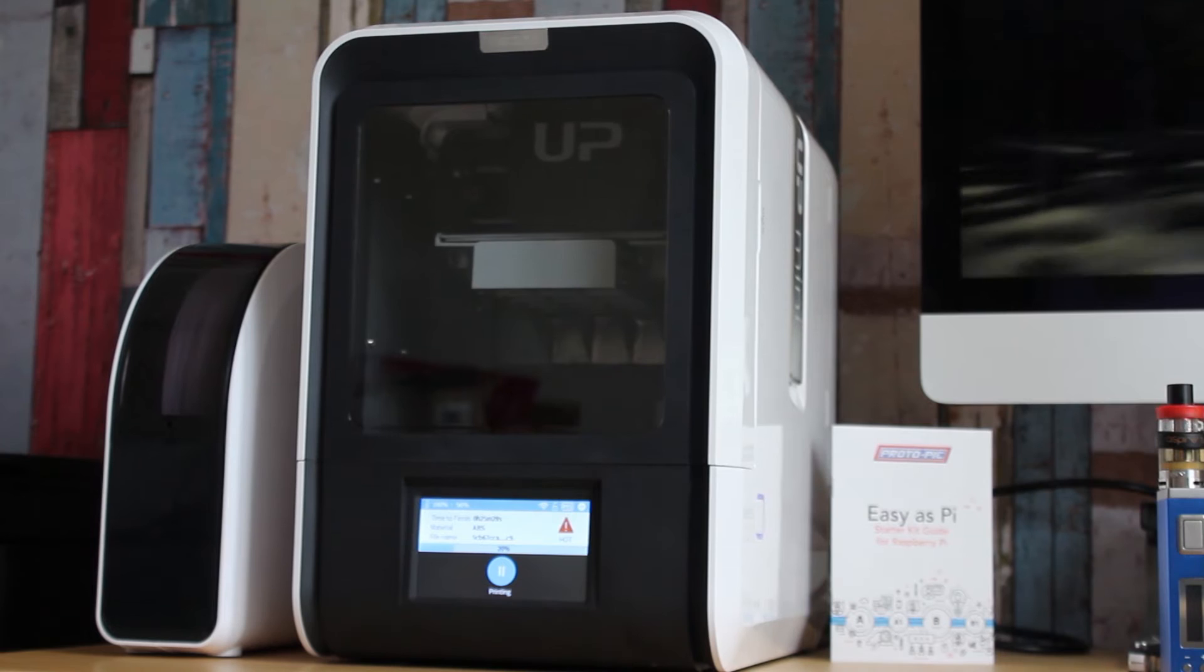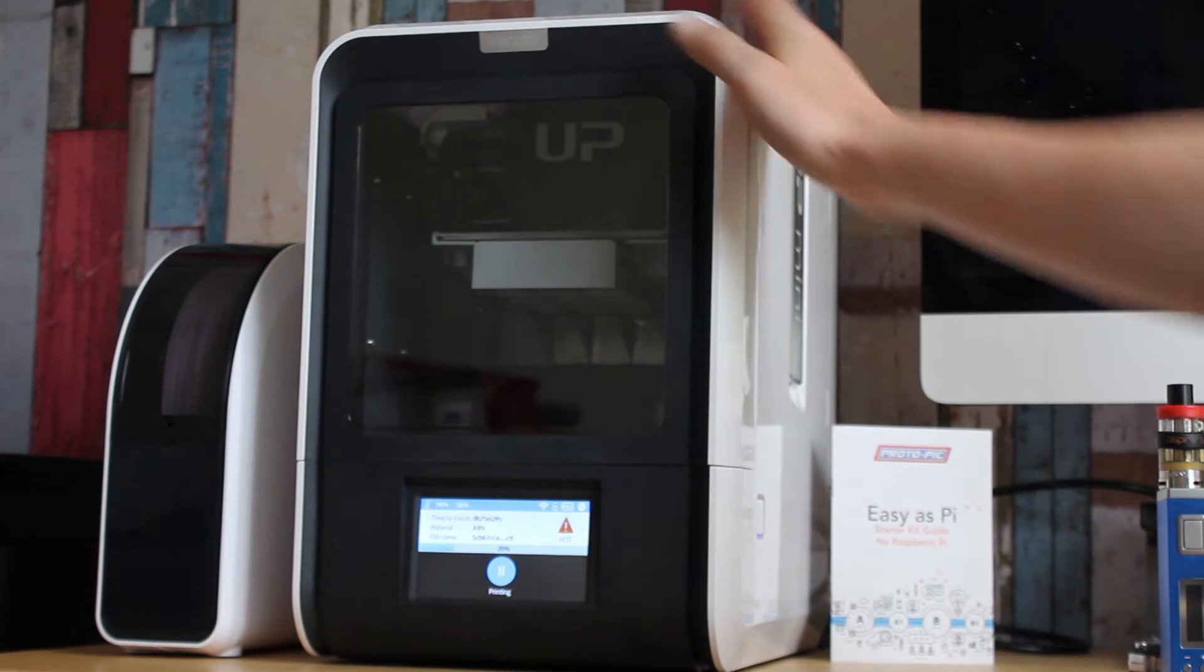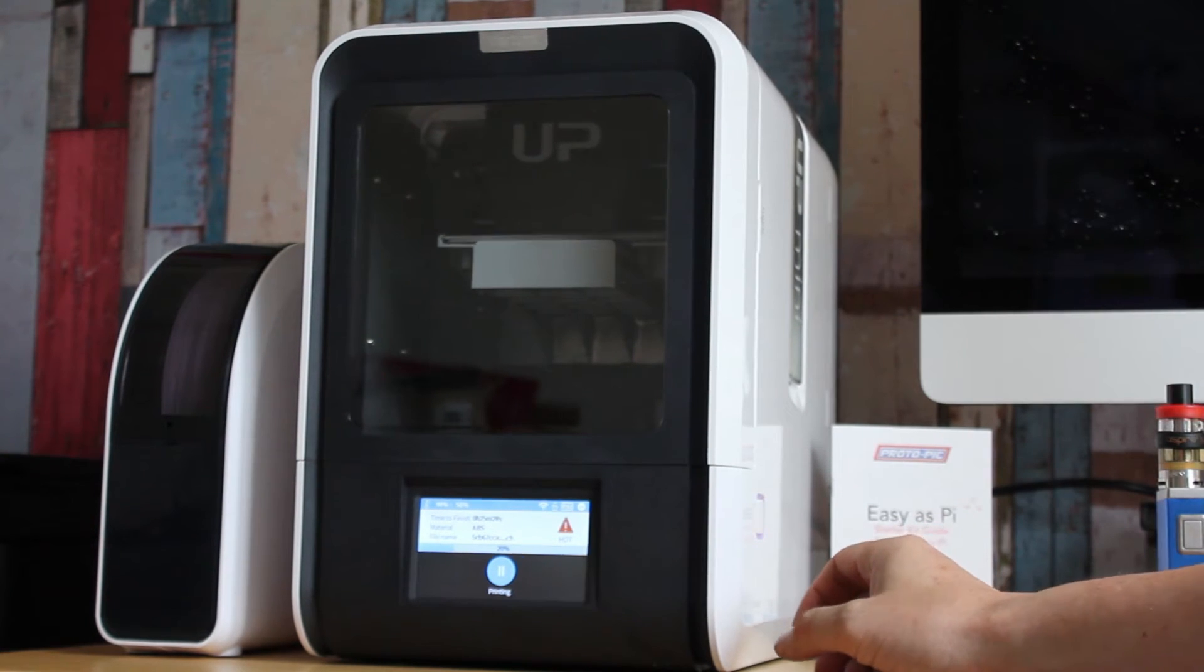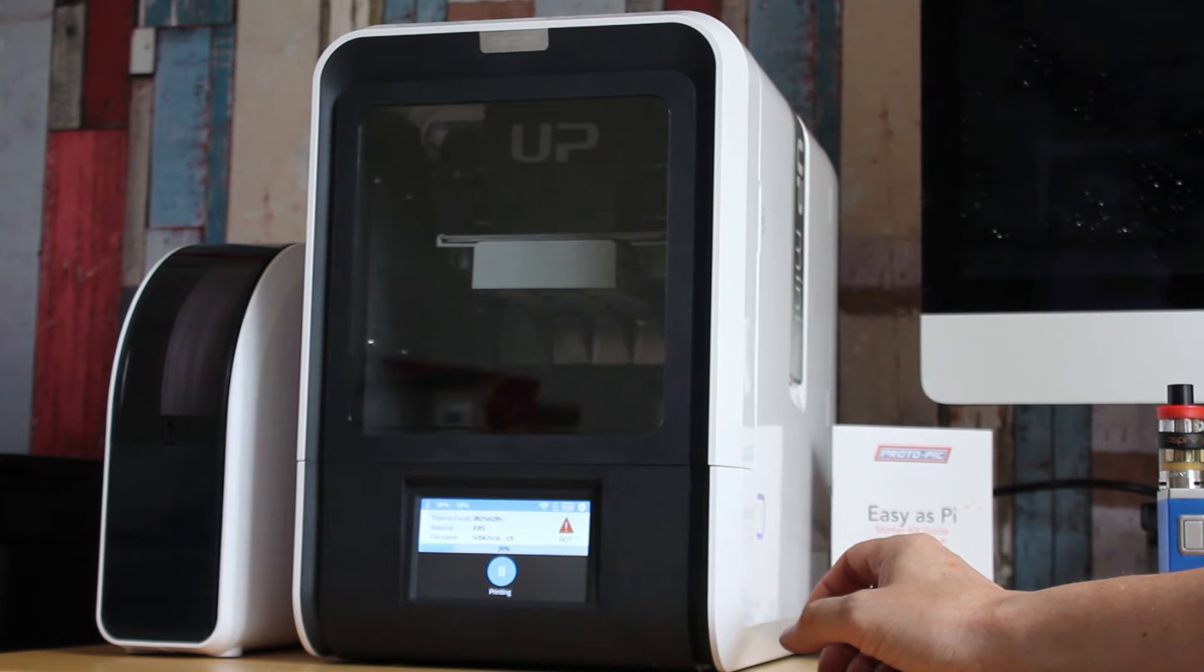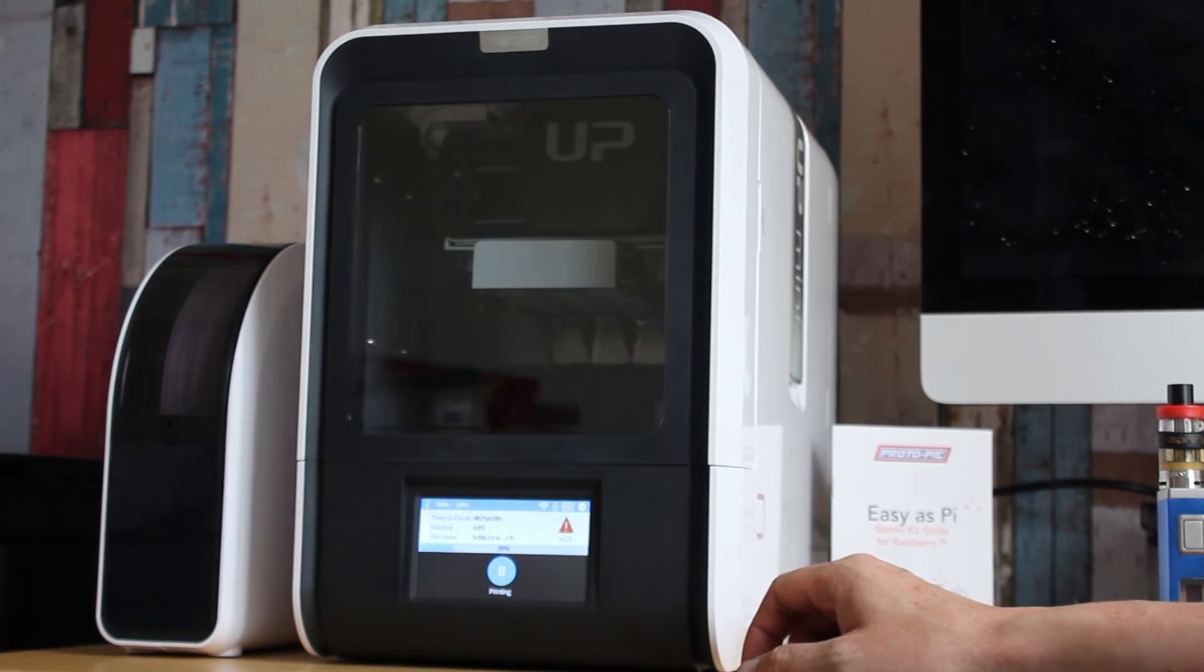Ok so now we've got the printer set up. This is it here. Printing off a test print. I'm printing out a gnome in low quality setting. Lowest and fastest it can go. And it says it will take 32 minutes.